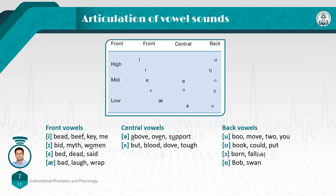Central vowels are the schwa and 'aa.' The schwa, as in 'above,' 'oven,' or 'support' — notice the vowel after the 's' sound in 'support.' The schwa here is a central vowel and it is mid-central. The next central vowel is 'aa,' as in 'butt,' 'blood,' 'dove,' or 'tough.'